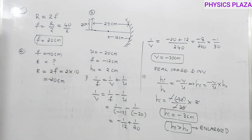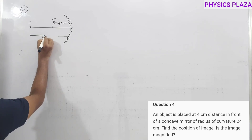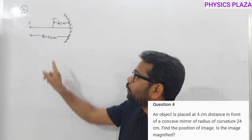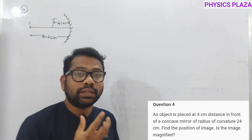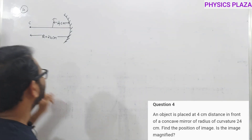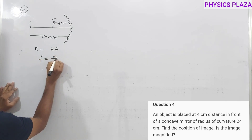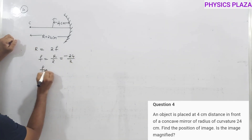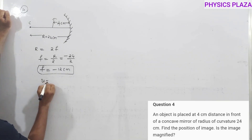Fourth numerical: radius of curvature is 24 cm and object is placed 4 cm in front of a concave mirror. First calculate focal length: f = R/2 = −24/2 = −12 cm. Object distance u = −4 cm. Now using the mirror formula, calculate image distance v.